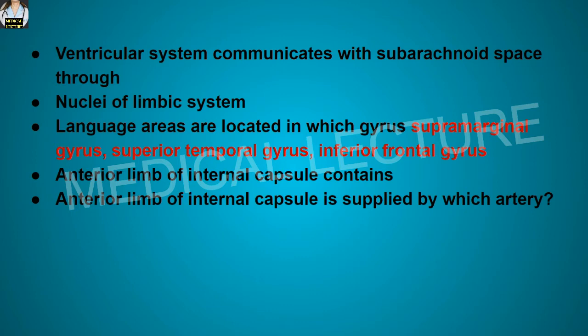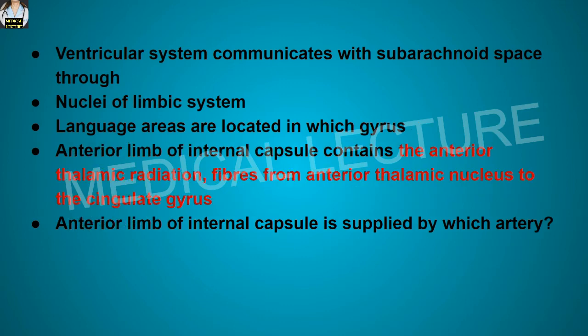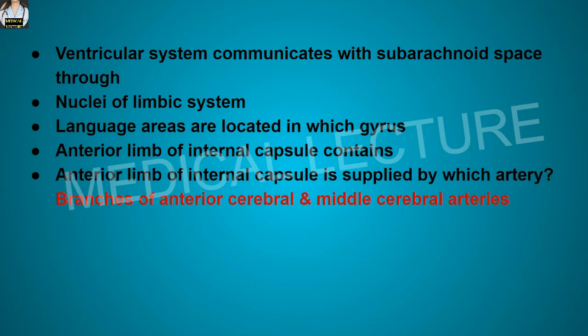The anterior limb of the internal capsule contains the anterior thalamic radiation and fibers from the anterior thalamic nucleus to the cingulate gyrus. The anterior limb of the internal capsule is supplied by branches of the anterior cerebral and middle cerebral arteries.